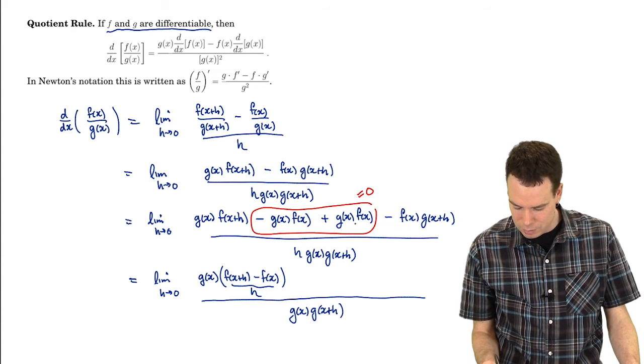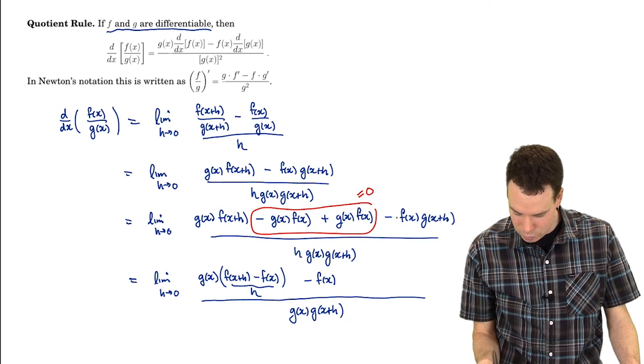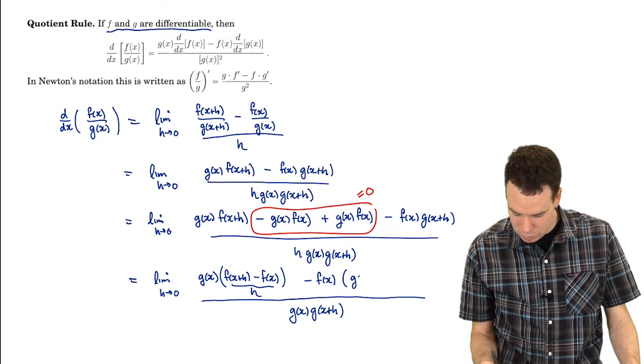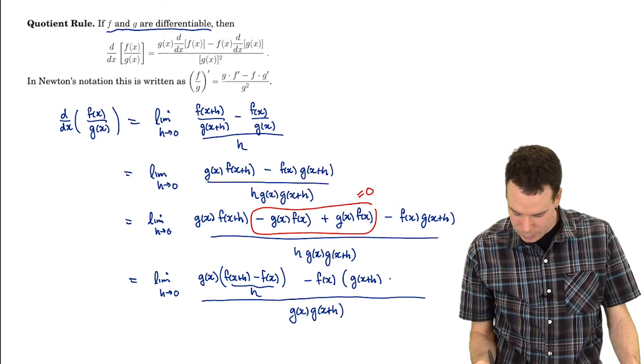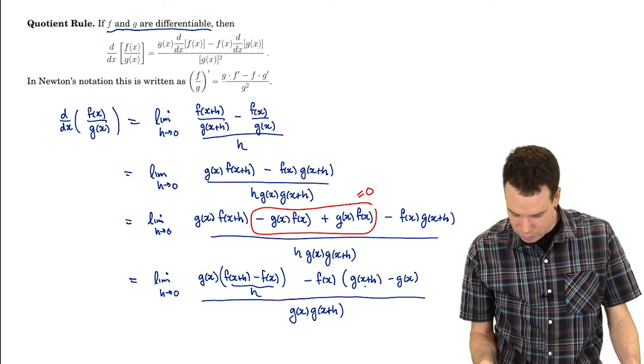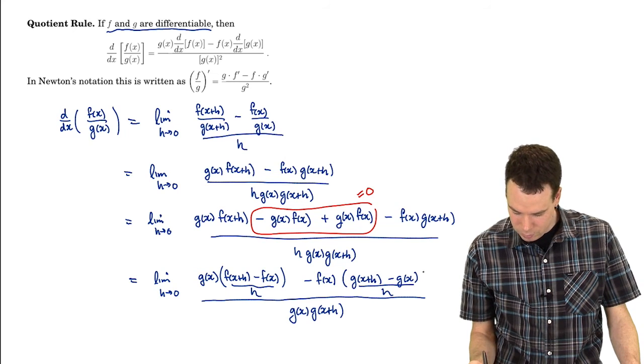So what I'm going to do is I'm going to factor out a negative f of x from both of these things. That leaves me with a g of x plus h and a minus g of x. And again that h that was in the bottom can now get thrown under there.